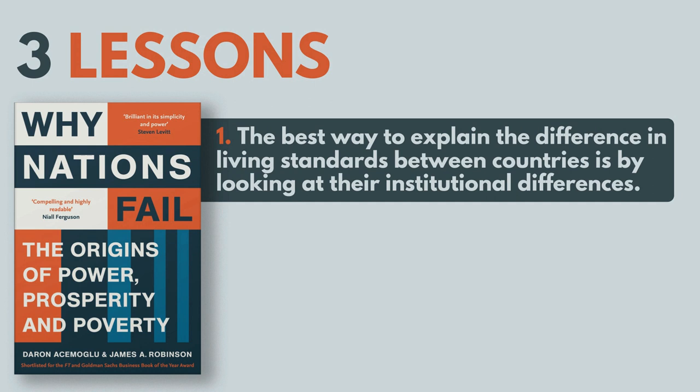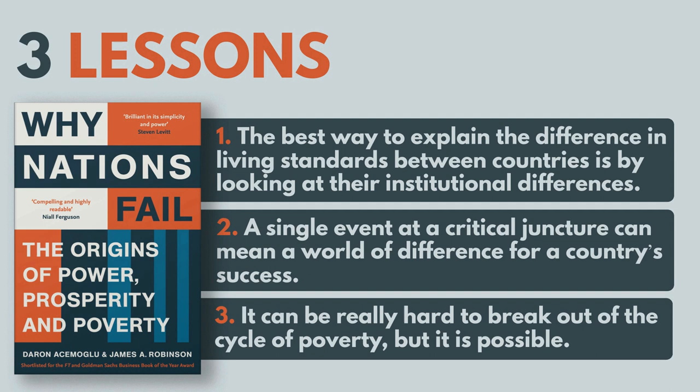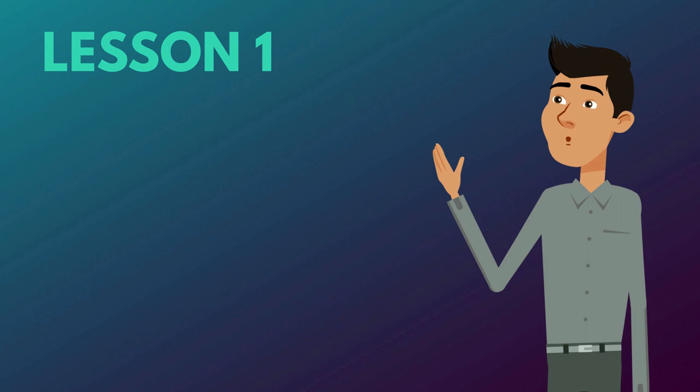1. The best way to explain the difference in living standards between countries is by looking at their institutional differences. 2. A single event at a critical juncture can mean a world of difference for a country's success. 3. It can be really hard to break out of the cycle of poverty, but it is possible. Let's get right to it and see what we can discover about inequality.